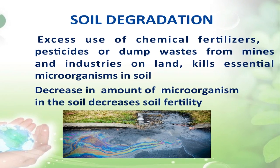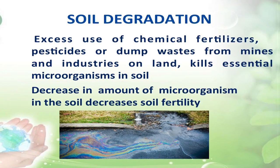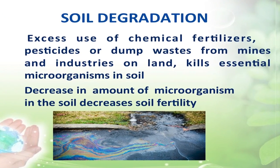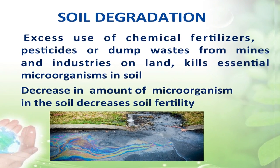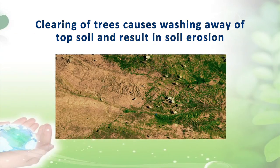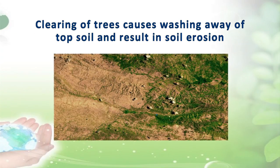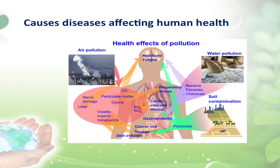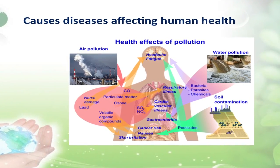First, let us discuss soil degradation. Excess use of chemical fertilizers, pesticides, or dump waste from mines and industries on land kills essential microorganisms in soil and makes it infertile. A decrease in the amount of microorganisms in the soil decreases soil fertility and makes it barren. Also, clearing of trees causes washing away of topsoil and results in soil erosion, which causes diseases that affect human health.